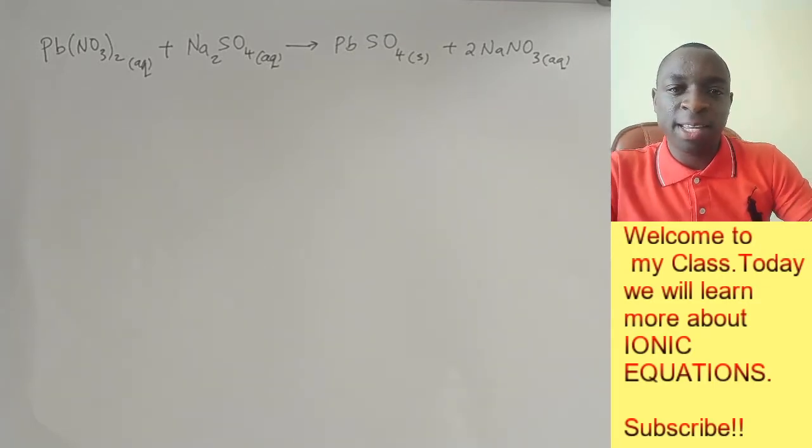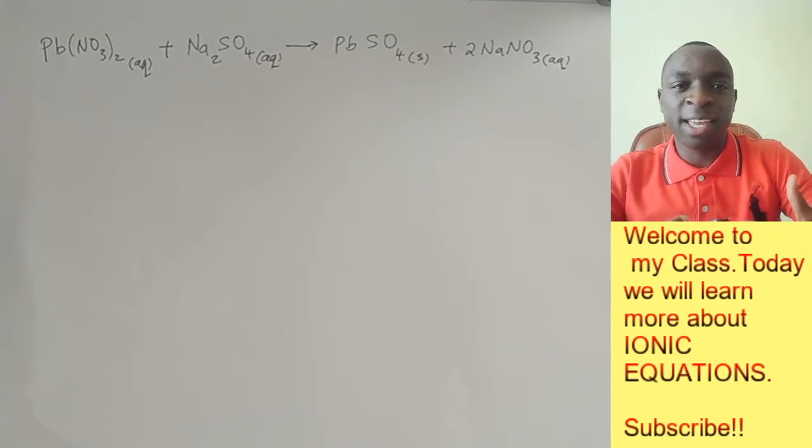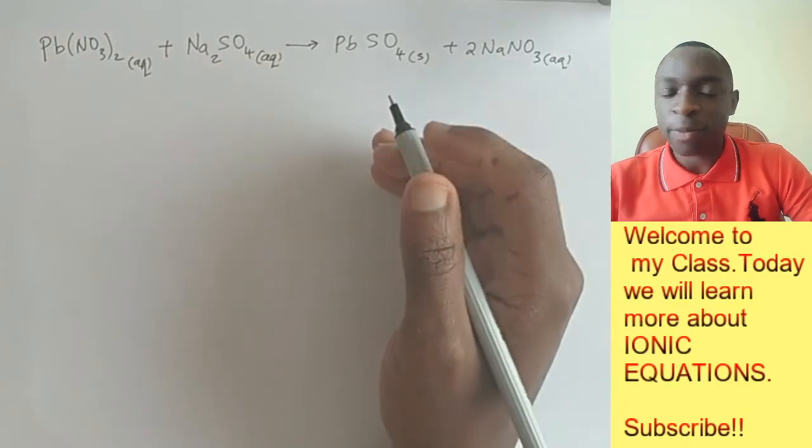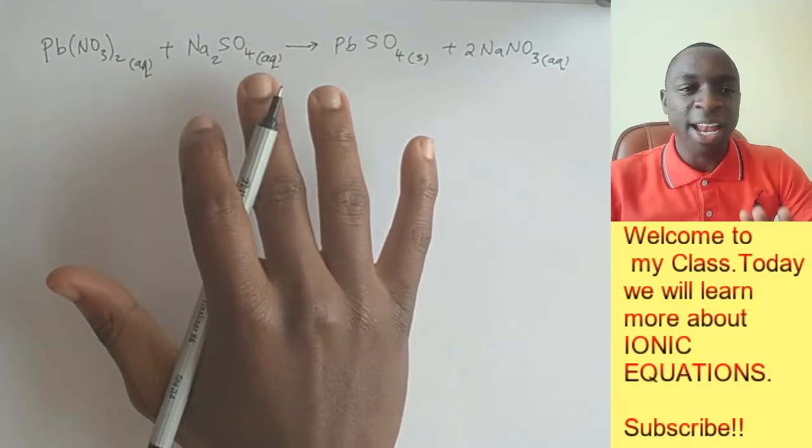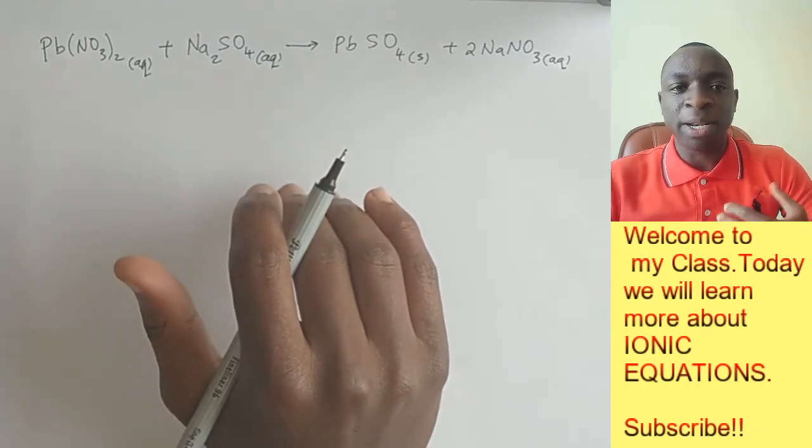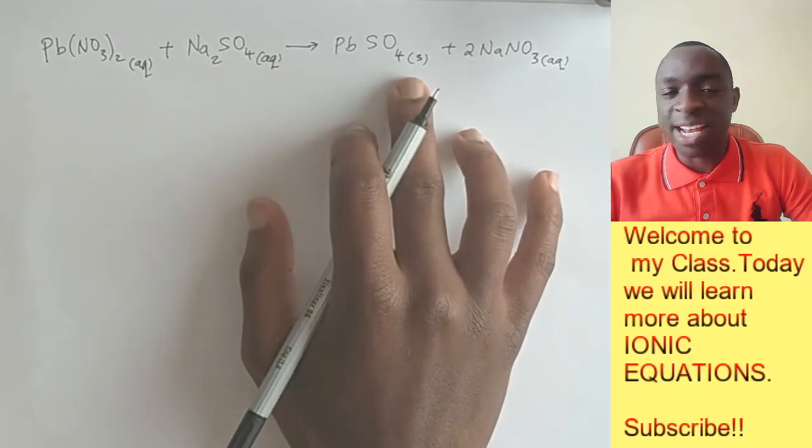So first step in writing ionic equation is obviously to write a balanced chemical equation like the one you see down right here. So this is the reaction between lead nitrate and sodium sulfate. This is a kind of a precipitation reaction. So it forms a precipitate, which is lead sulfate solid.